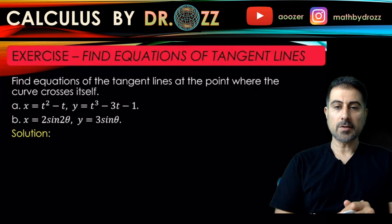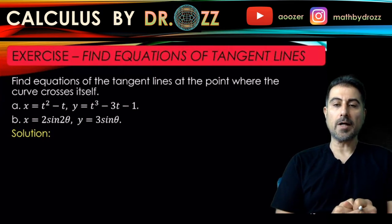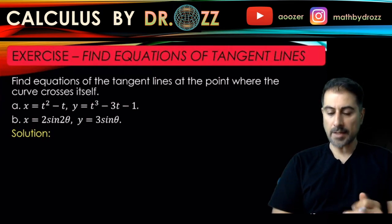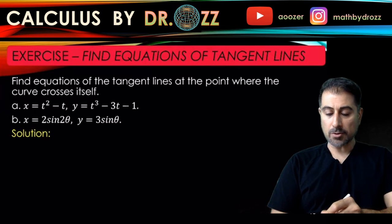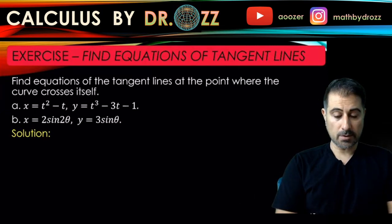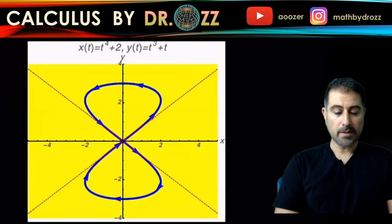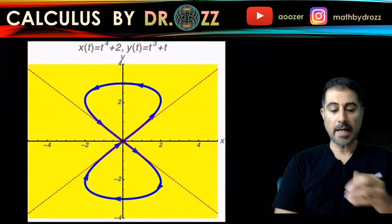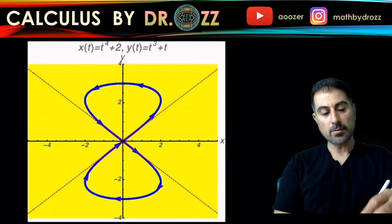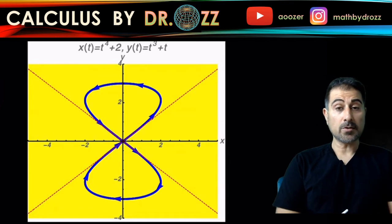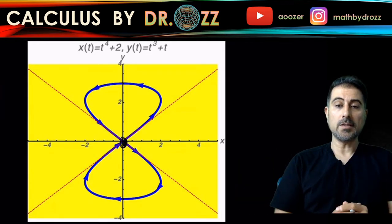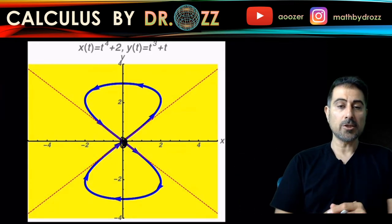You can pause the video any minute here and just get a good visual of 2 sine 2 theta and 3 sine theta. I'm going to show you what I got here - it's a ribbon shape, and the self-intersection happens at the origin. Without graphing this, it's very hard to find those self-intersecting points.